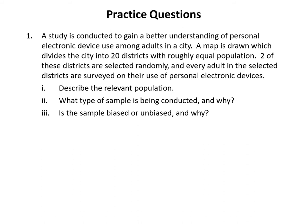The following is a set of five practice questions providing review covering the material in this lesson. For each of the five questions a study scenario is given and we're asked to answer three questions: first, describe the relevant population for the study; second, what type of sample is being conducted and why; and third, is the sample biased or unbiased and why. Question One: A study is conducted to gain a better understanding of personal electronic device use among adults in a city. A map divides the city into 20 districts with roughly equal population. Two of these districts are selected randomly and every adult in the selected districts is surveyed on their use of personal electronic devices.